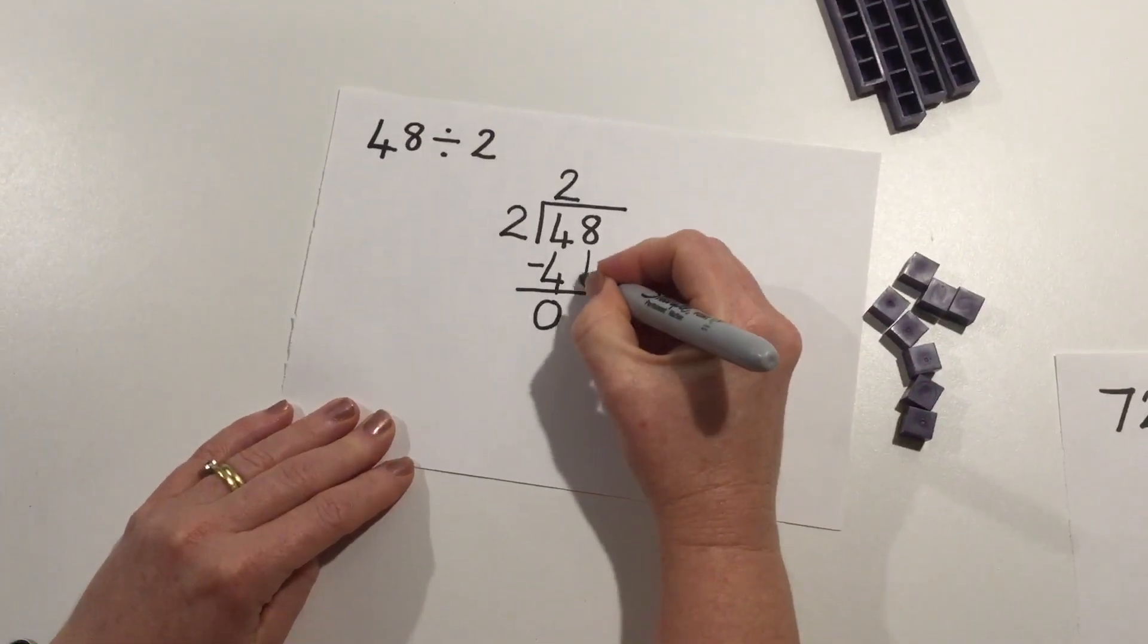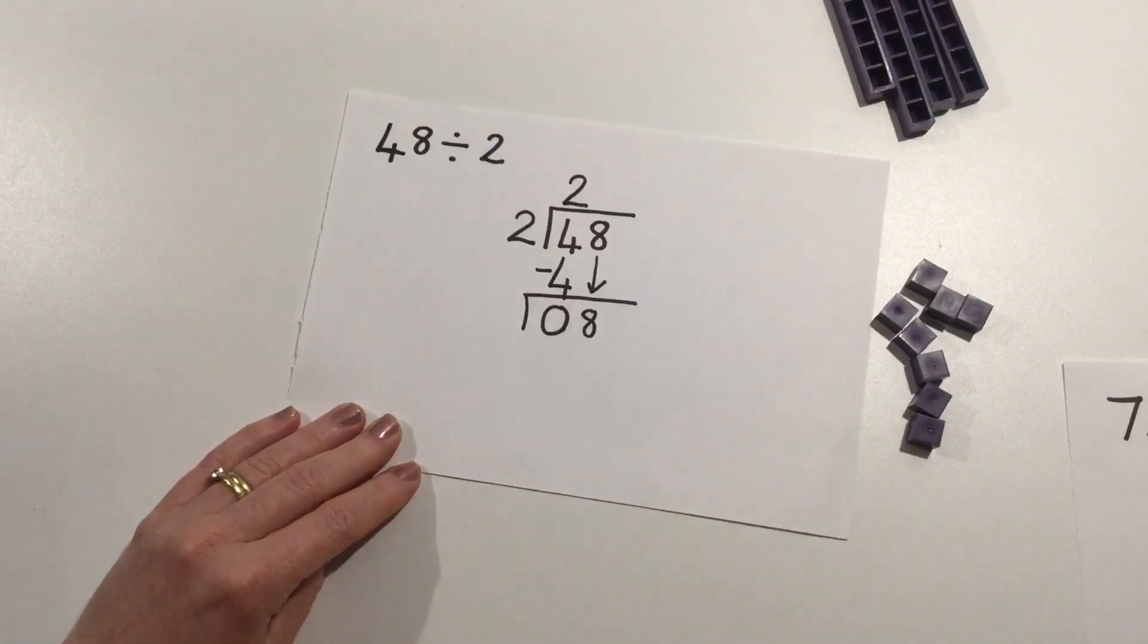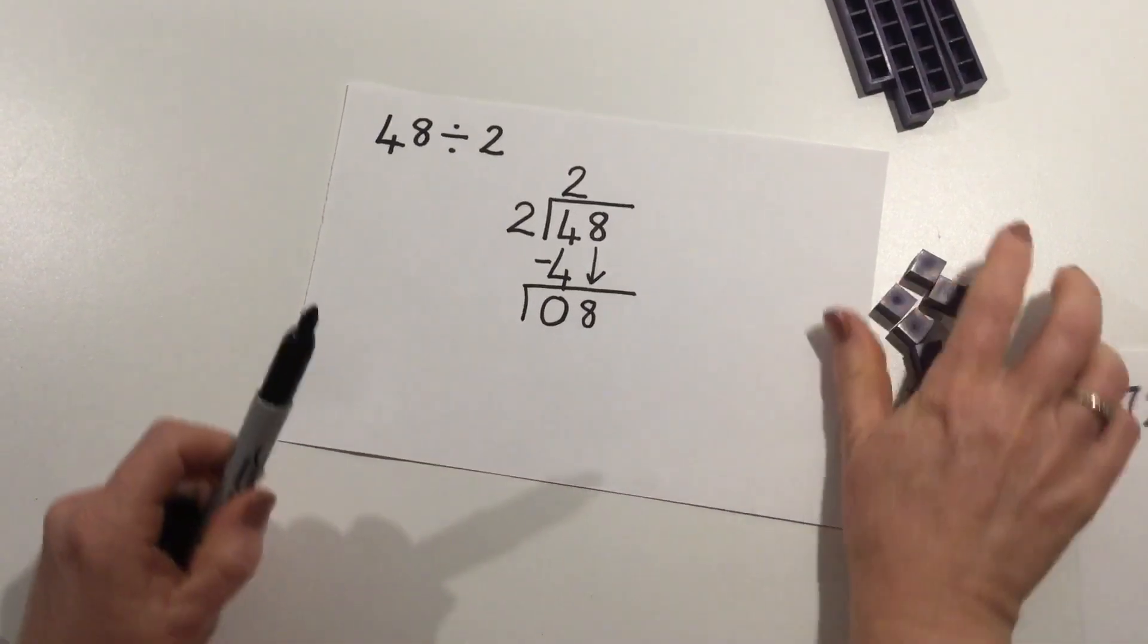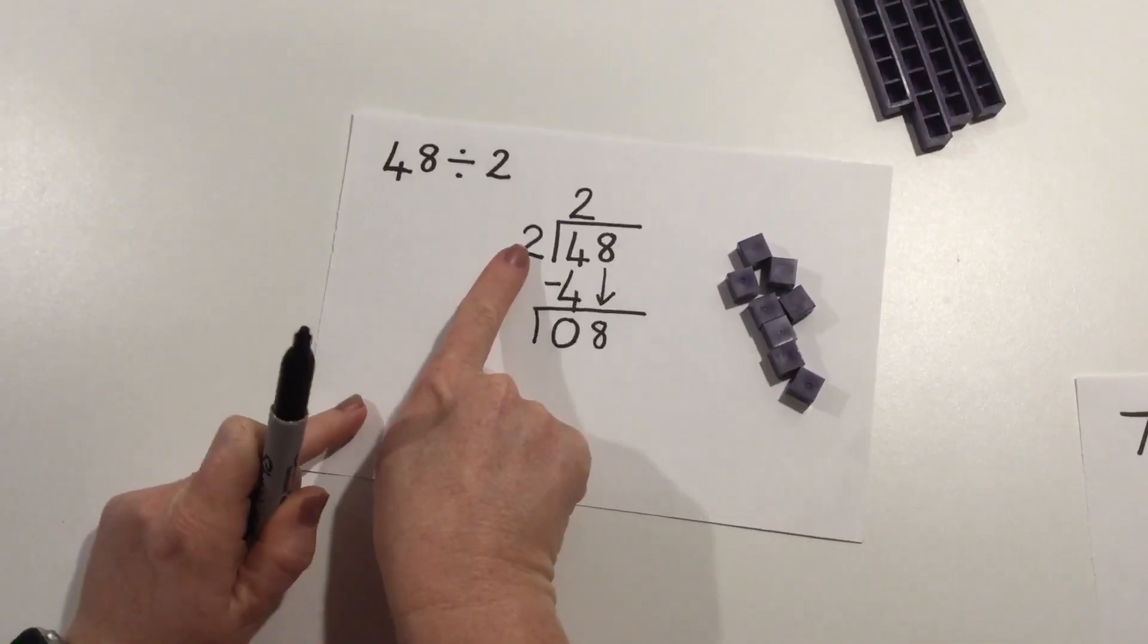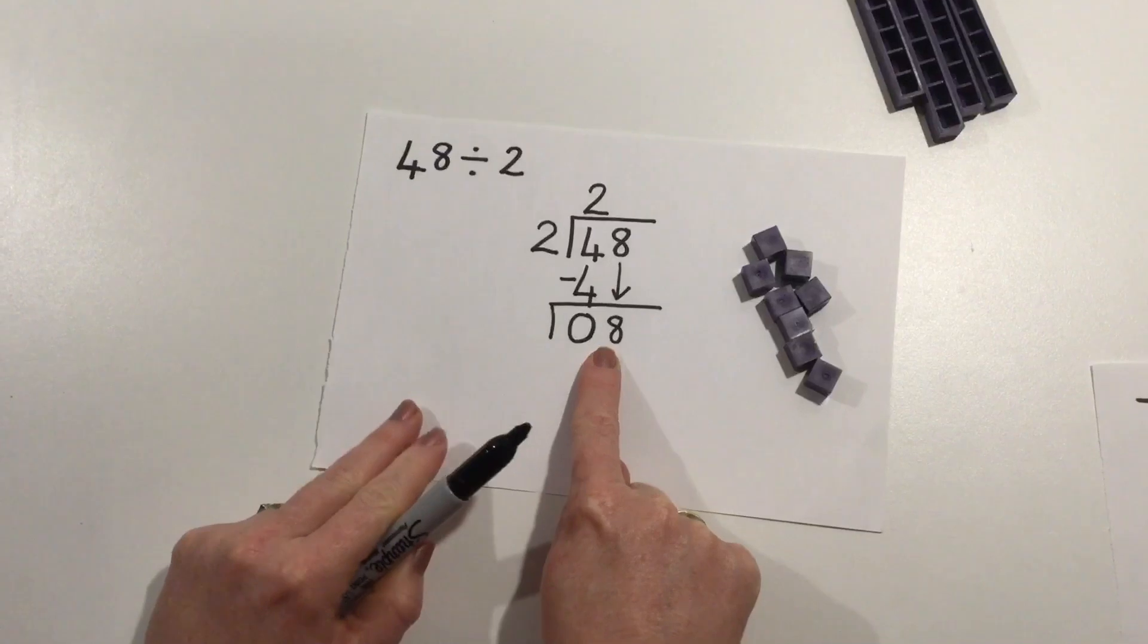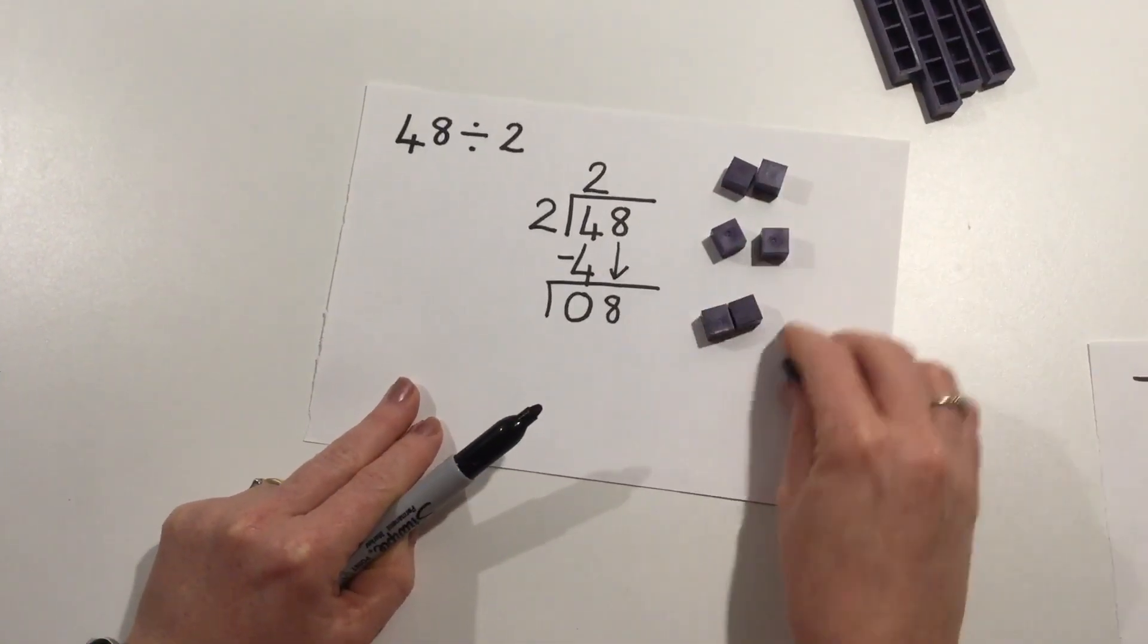Now I'm going to bring down my 8 ones and I'm going to create a new bus stop. So now I'm going to start my process again. How many groups of 2 can I make if I've got 8 ones?